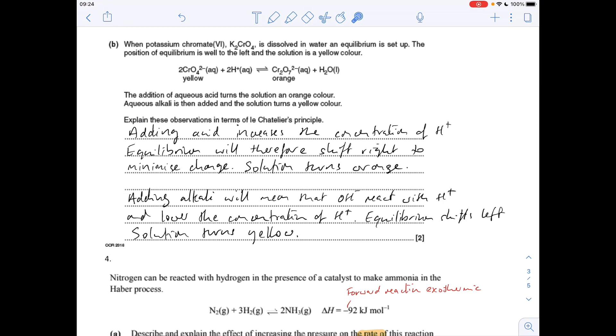Moving on to the addition of alkali. Obviously an alkali is going to have the opposite effect. Adding alkali is going to remove H+ ions, decrease the concentration, and so more of the reverse reaction will take place to replace the H+ ions that are lost. So more of this reaction will happen and the equilibrium moves backwards, so it's going to look more yellow.